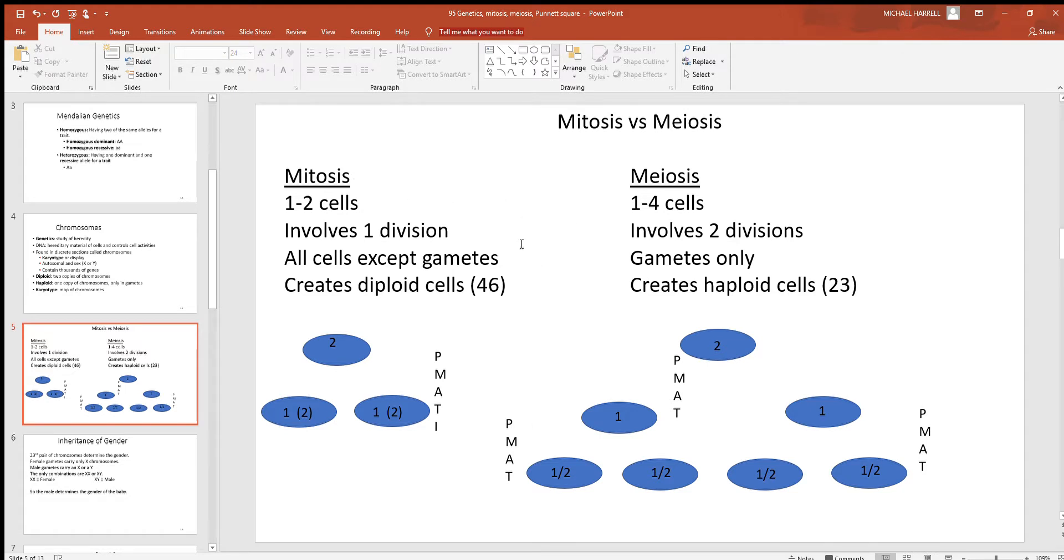Meiosis will involve two divisions. With mitosis, all cells of the body, except the reproductive cells, if they can divide, will go through mitosis. But only the gametes, the reproductive cells, go through meiosis. Mitosis will always pass on 23 pairs, 46 chromosomes, to each one of those new cells called daughter cells. But meiosis passes half that, 23 chromosomes.